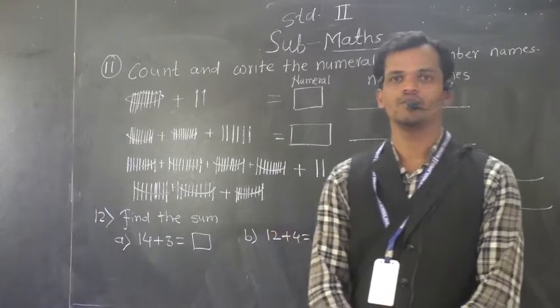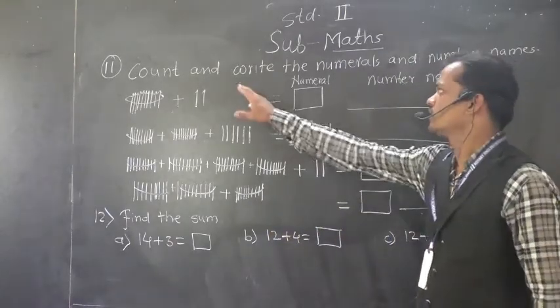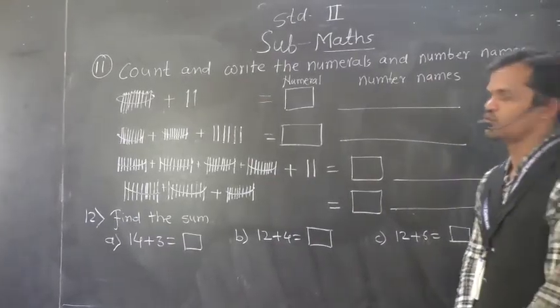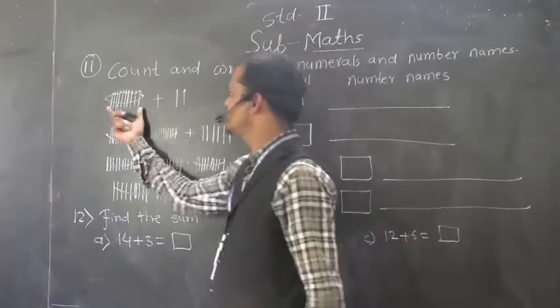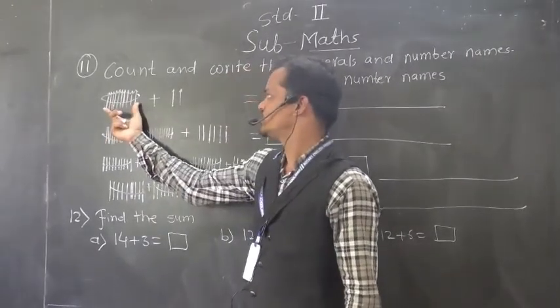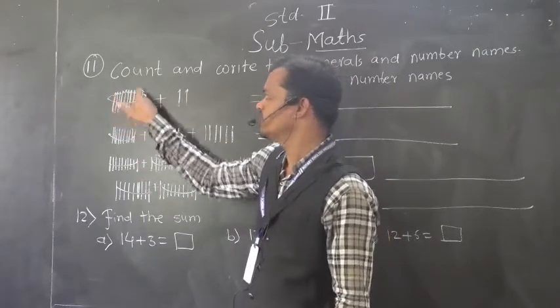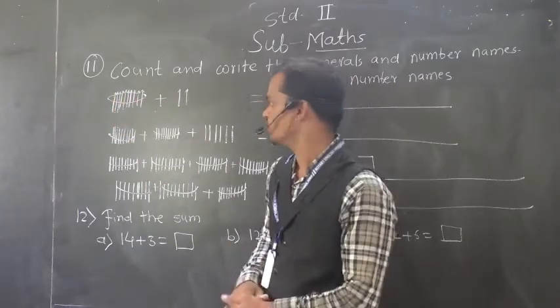Let's go to question number 5, question number 11. Count and write the numerals and number names. Suppose these are the bunch, this is the bunch of pencil, and in that bunch paint pencil something.